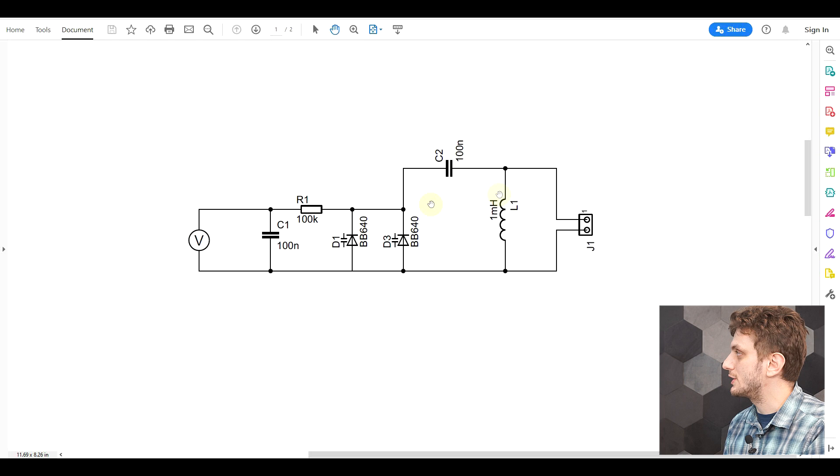This first capacitor is here just to filter out any noise coming from the supply. It doesn't really have any other use. Then my diodes are in series with a large value capacitor. So this is just a DC blocking capacitor to isolate the DC part of the signal. And then I have a one millihenry inductor, which together with my varicaps is forming an LC circuit.